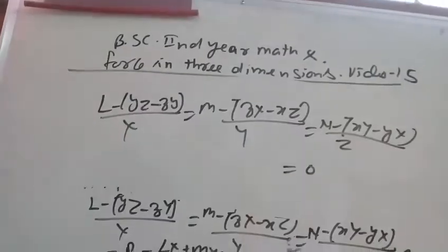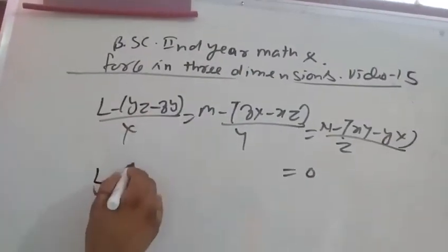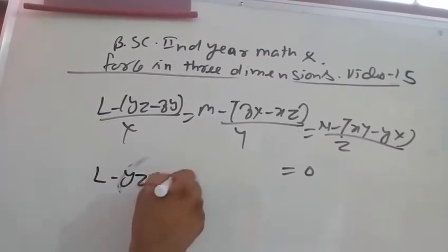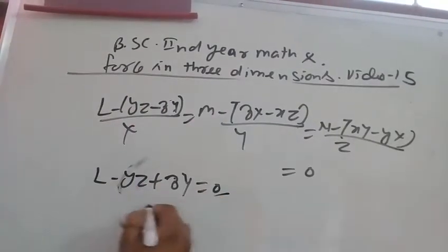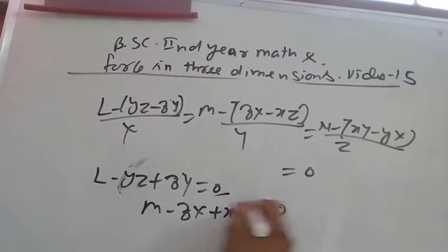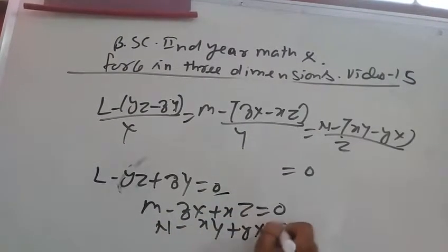One term equal to zero. This is equal to YZ minus ZY equal to zero. This is capital Y. And M minus ZX plus XZ equal to zero. And N minus X capital Y minus small Y capital X equal to zero.